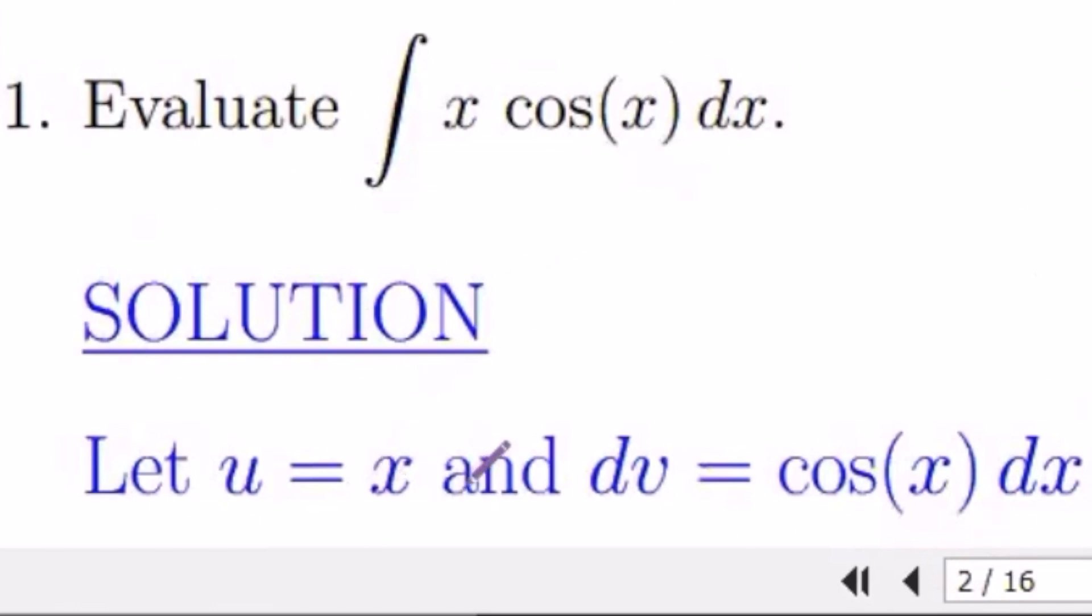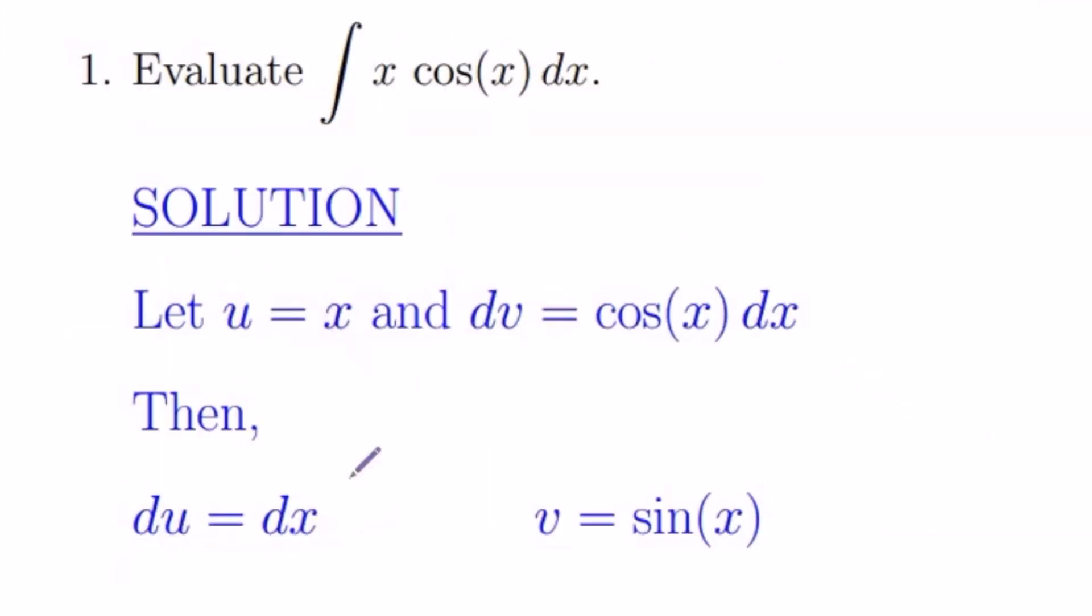u equals x. Then dv is the remaining part. So dv equals cosine x dx. When I take the first derivative, du equals 1 times dx, which is just dx.